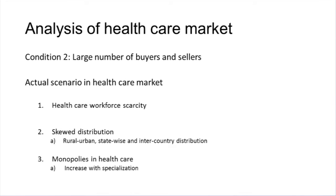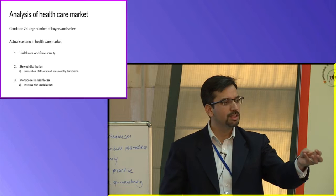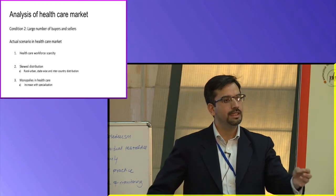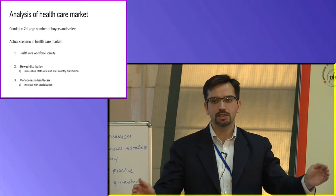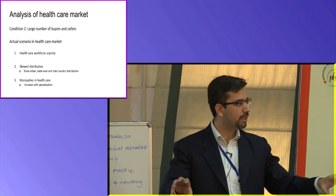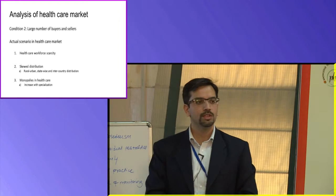The second condition was that you need a large number of buyers and sellers. One of the problems with the supply side story is shortage of staff — shortage for all kinds of healthcare workforce, starting from doctors, nurses, paramedical workers — and then to top it up there is a skewed distribution. First is the absolute shortage and then there is a relative shortage at the level of urban or rural facilities, which leads to skewed distribution.